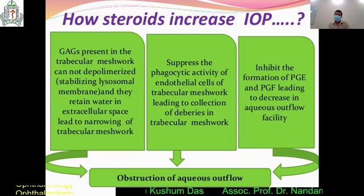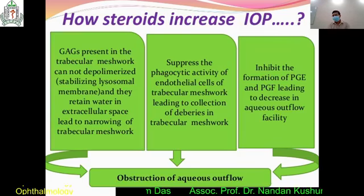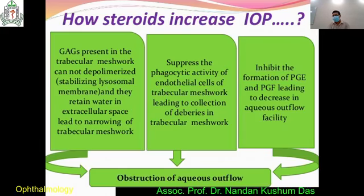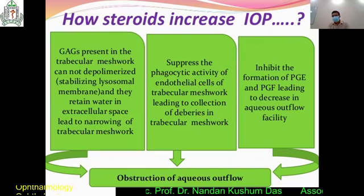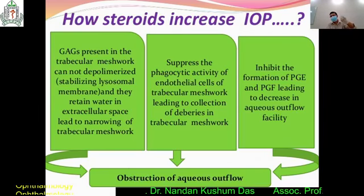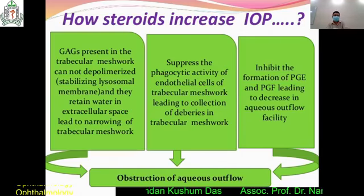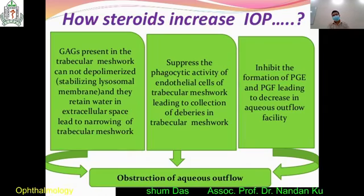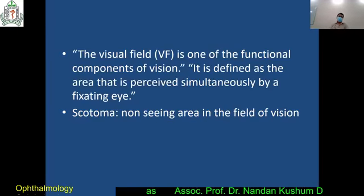Prostaglandin theory: steroid inhibits the formation of prostaglandins — specifically prostaglandin E and prostaglandin F — leading to a decrease in aqueous outflow facility. This last mechanism is controversial; the first two — GAG theory and phagocytic theory — are the more important ones.